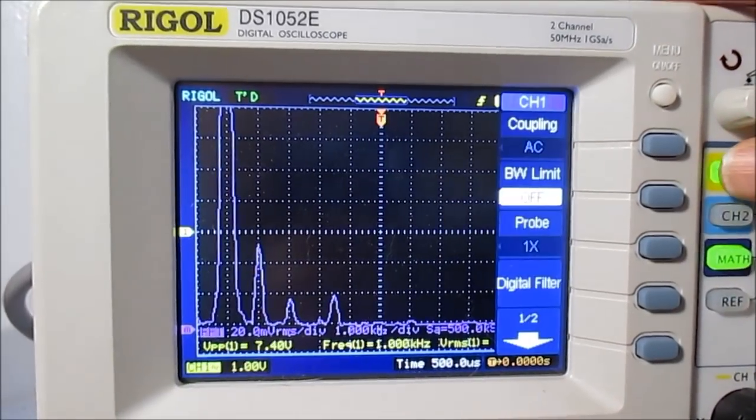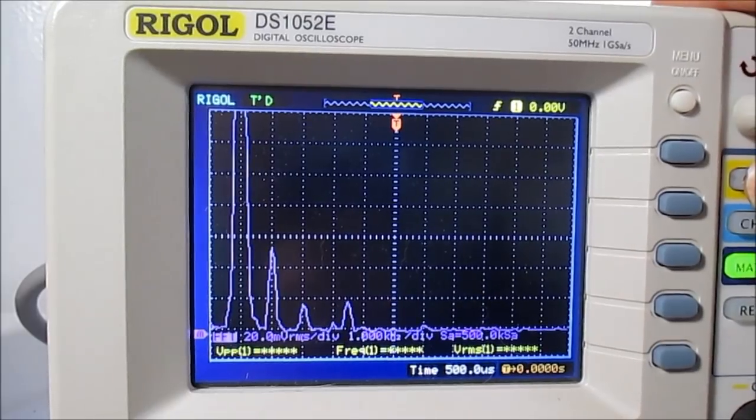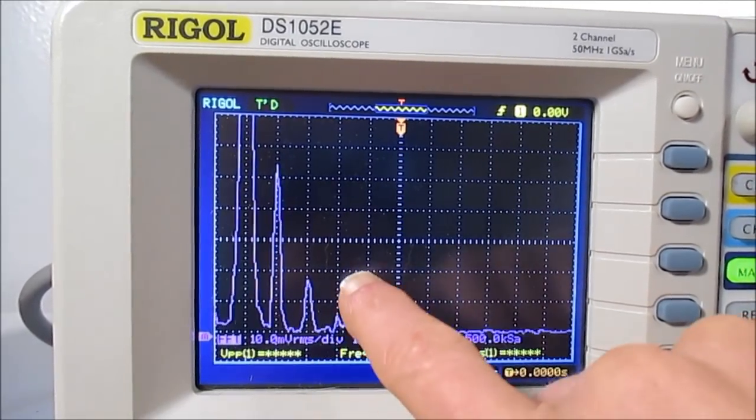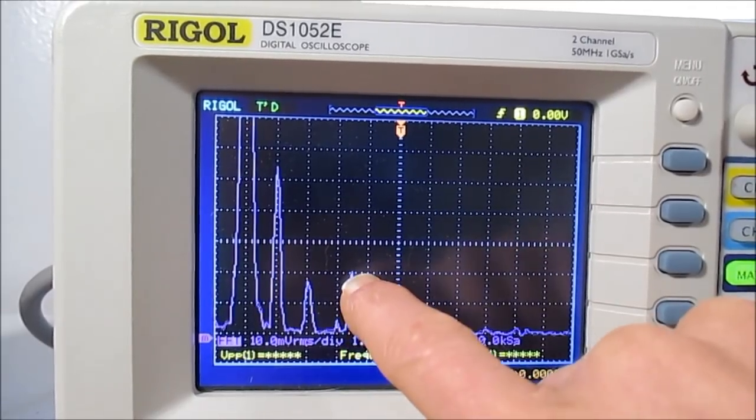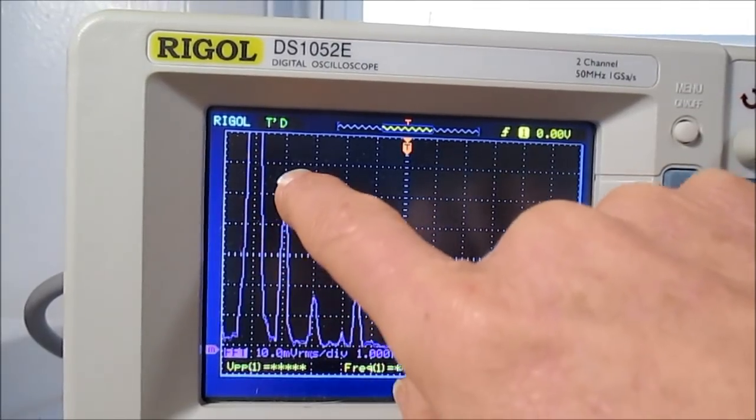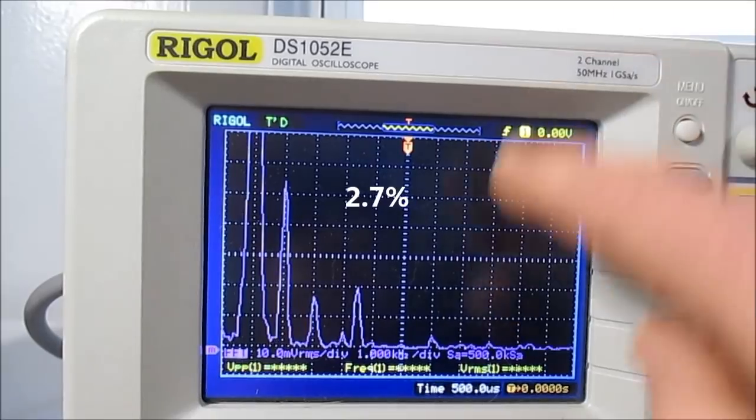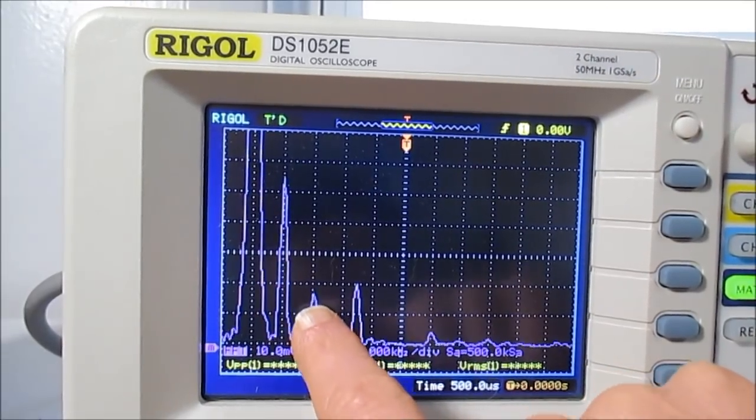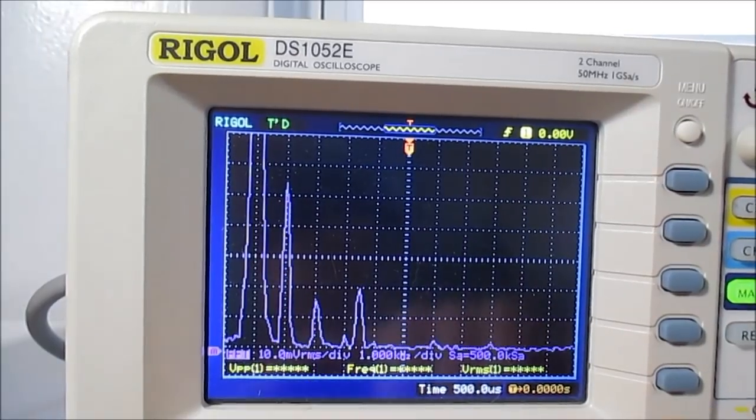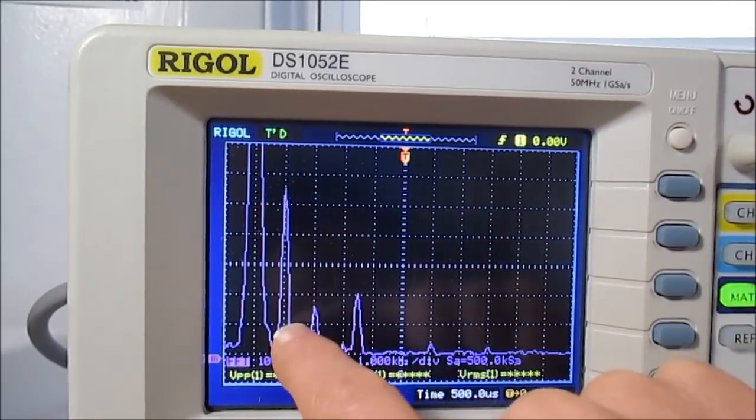Cleans it up quite a bit. So it drops it down to 2 graticules is 1%, 2%, maybe like 2.2 or something. And our third harmonic is a little under 1% now.